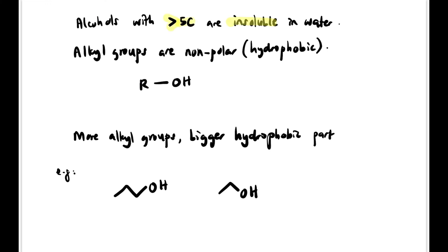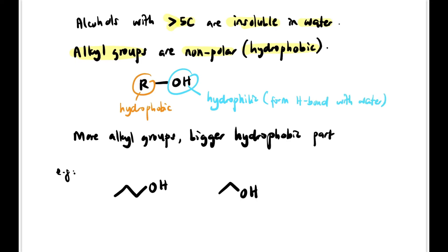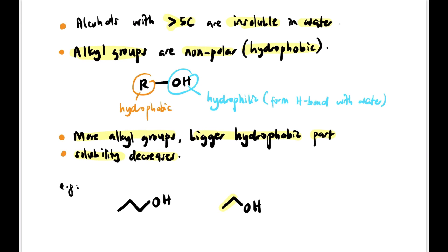However, alcohols with more than five carbons are insoluble in water because the larger alkyl group is non-polar (hydrophobic). In alcohol there is an R group that is hydrophobic and an OH group that is hydrophilic — hydrophilic means it likes water because it can form hydrogen bonds. The larger the alkyl group, the larger the hydrophobic part, and solubility decreases. Between two compounds shown, the one with the smaller hydrophobic part is more soluble.